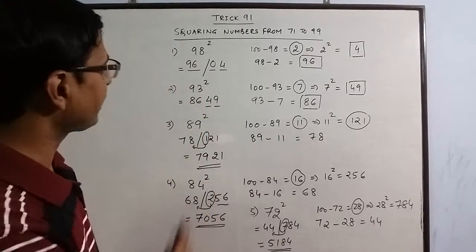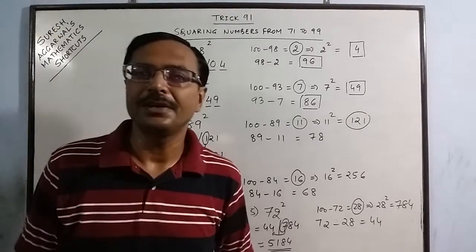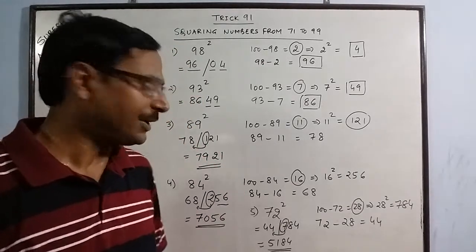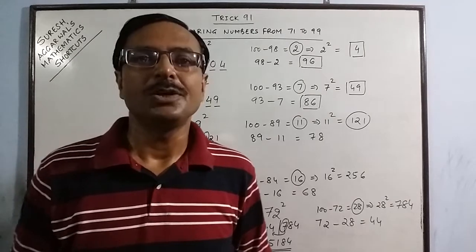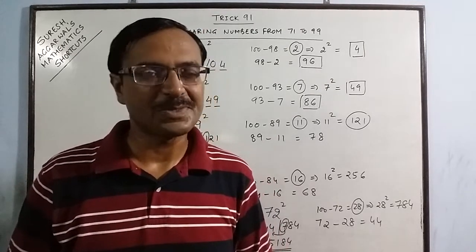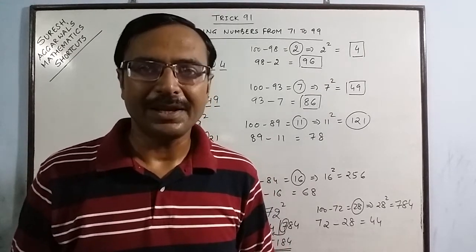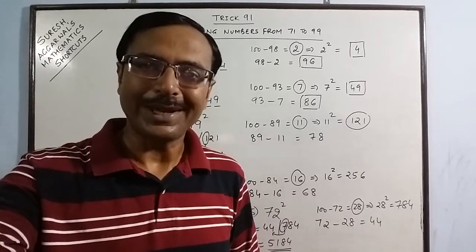So this is yet another amazing trick through which you can find the squares of numbers from 71 to 99 very easily using just 3 seconds. So friends, enjoy mathematics, keep learning and share and subscribe the channel if you like it.